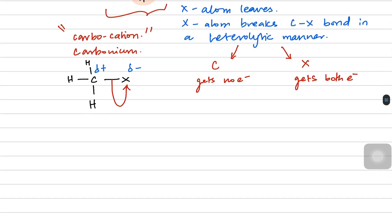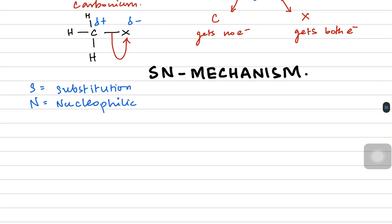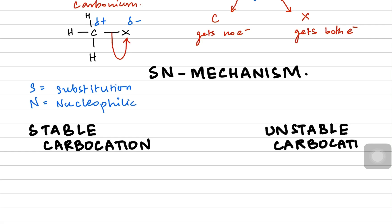The carbon-halogen bond, which was already polar, breaks in a heterolytic manner forming a carbocation. In the substitution nucleophilic (SN) mechanism, there are two possibilities depending on carbocation stability: a stable carbocation or an unstable carbocation.